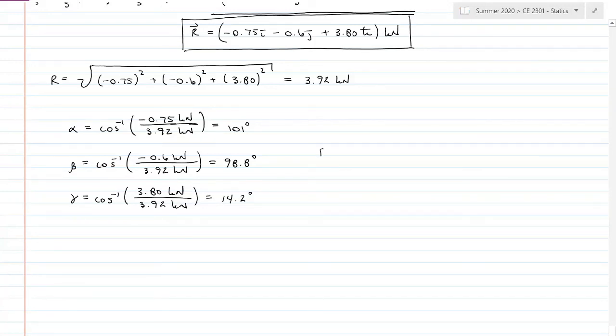The resultant vector in magnitude and direction can be represented as 3.92 kilonewtons at 101 degrees, 98.8 degrees, and 14.2 degrees.